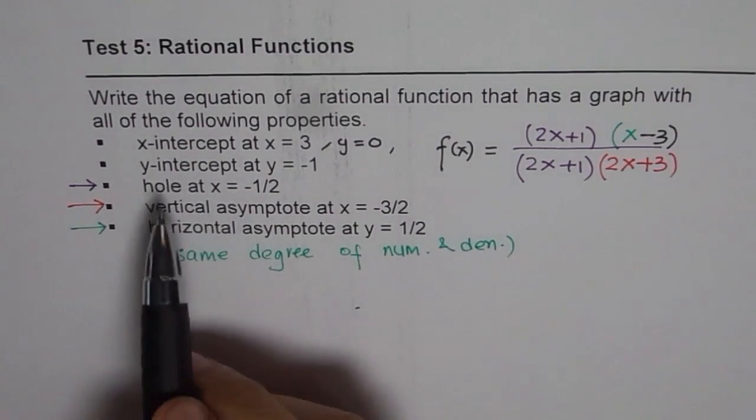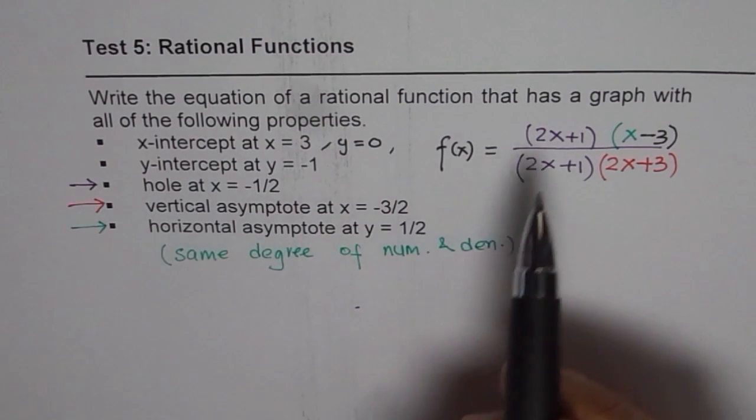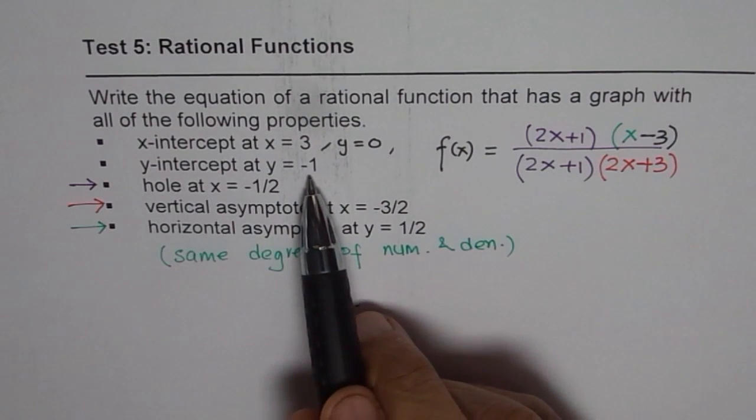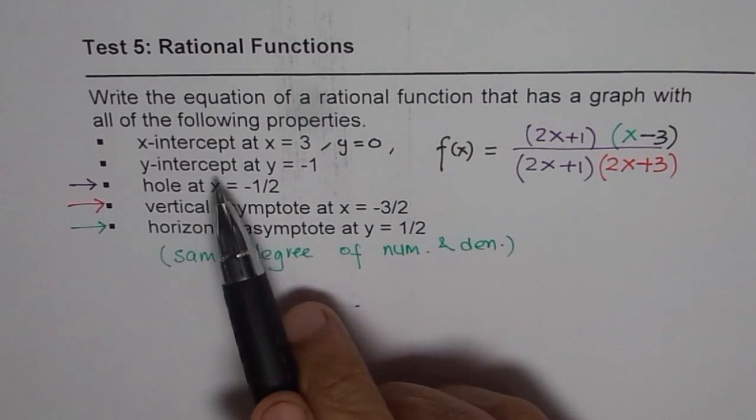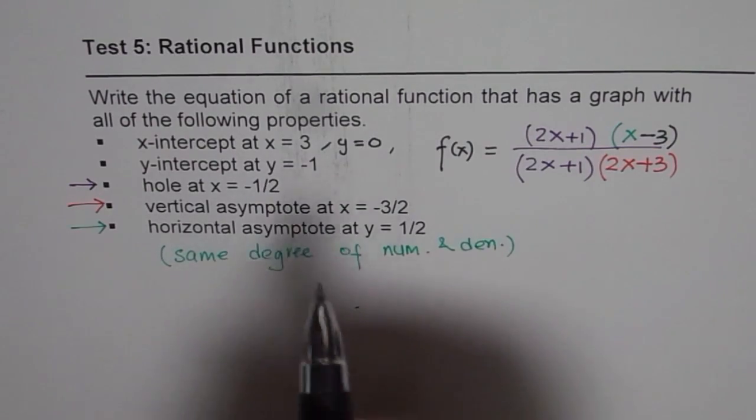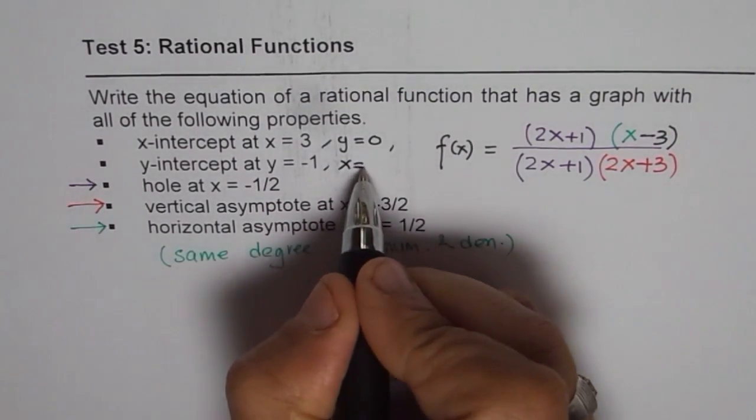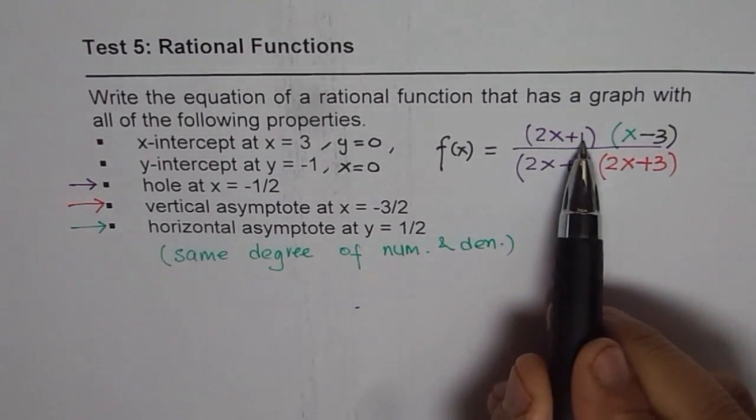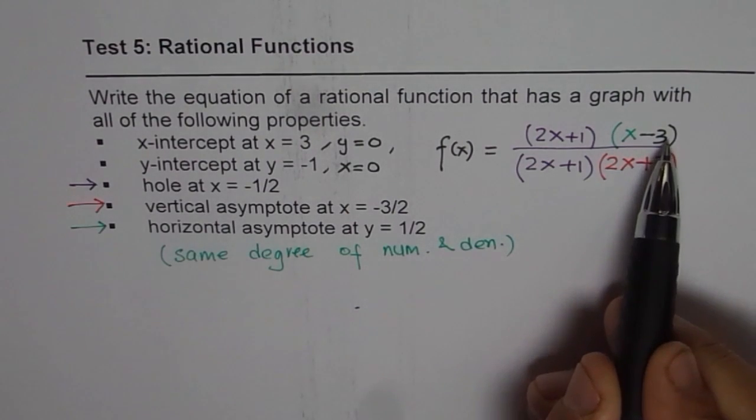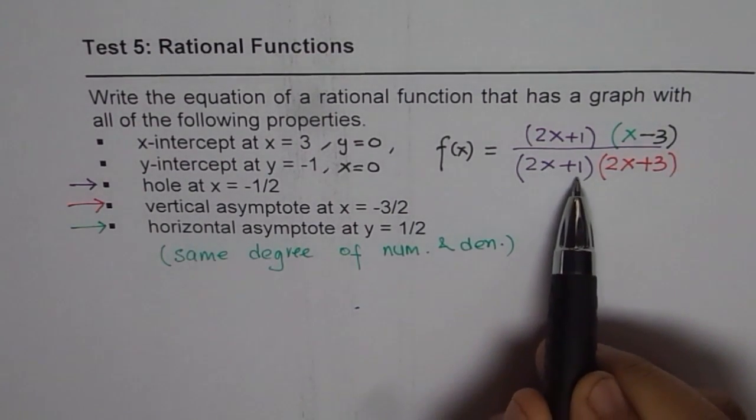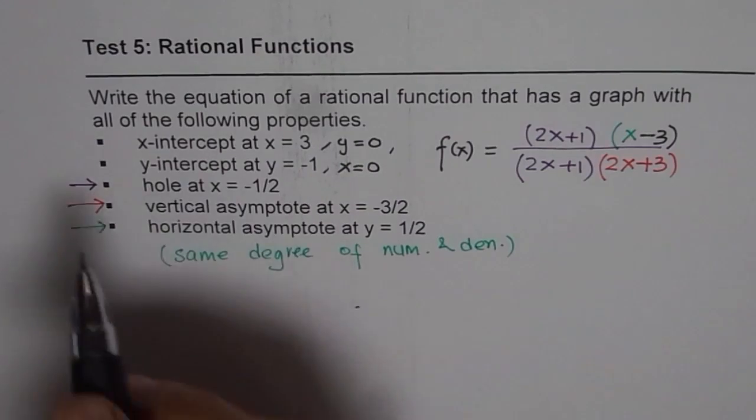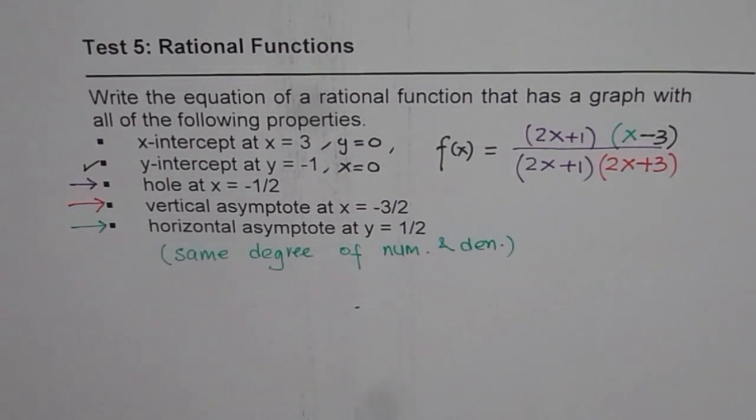Now, we should check what Y-intercept, does it have the same Y-intercept as asked for or sometimes we may have to do some changes. Y-intercept is a point where X is equals to 0. So, if I write X as 0, I get 1 times minus 3 in the numerator and 1 times plus 3 in the denominator. Minus 3 divided by plus 3 is minus 1.